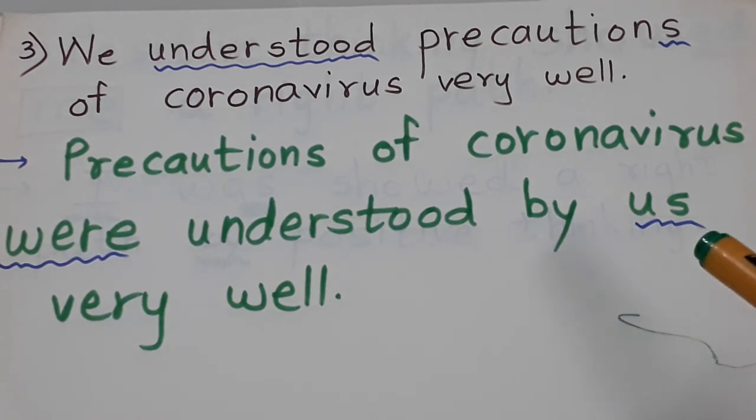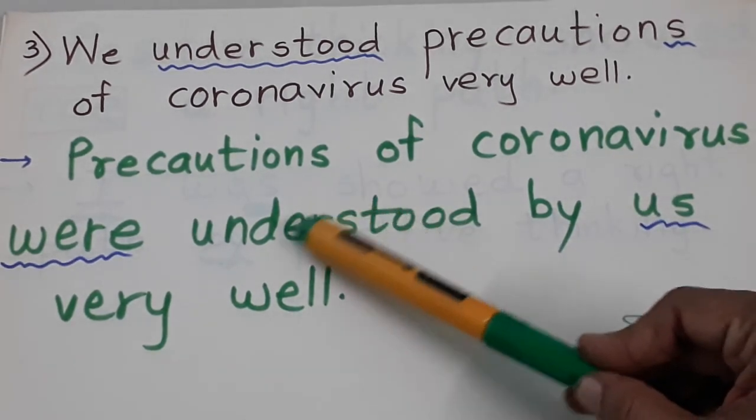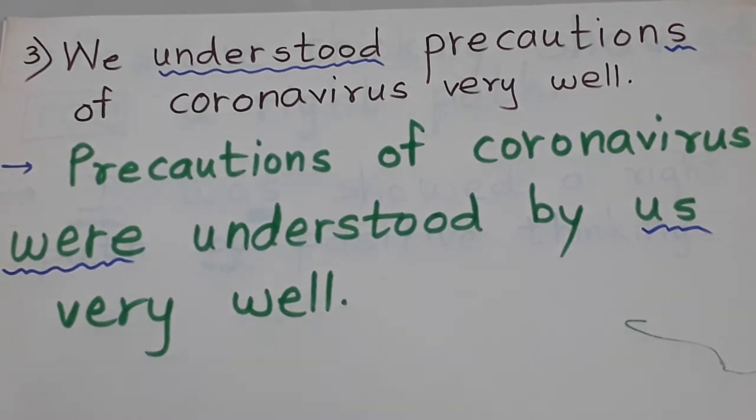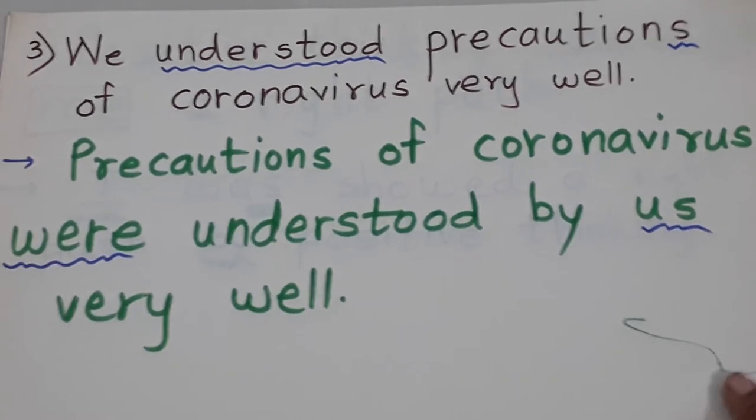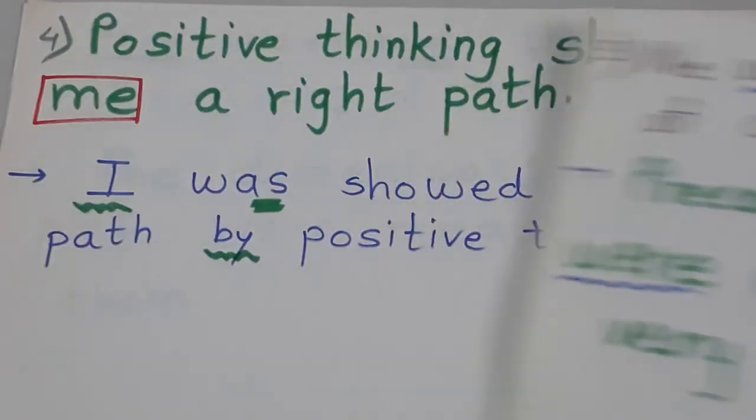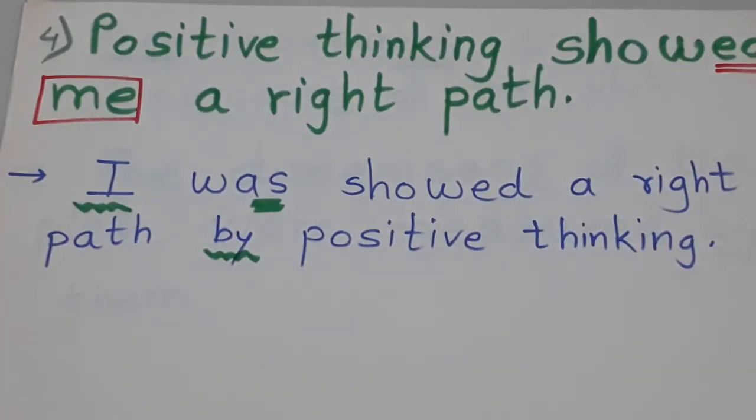So in the answer: Precautions of coronavirus were understood by us very well. So we complete the sentence this way. First pay attention to the verb, then complete the next sentence properly.